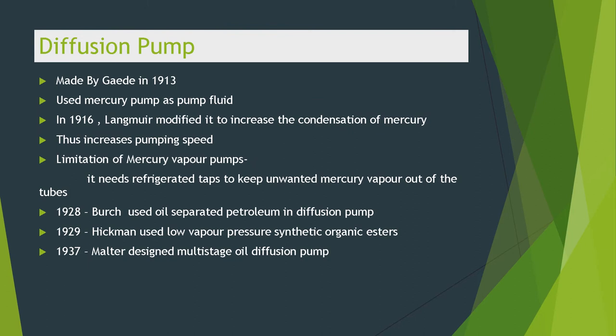Today's topic is the diffusion pump. It was made by Gaede in 1913, who used mercury as the pump fluid. In 1916, Langmuir modified it to increase the condensation of mercury, thus increasing the pumping speed. The limitation of mercury vapor pumps is that they need refrigerated traps to keep unwanted mercury vapor out of the tube.